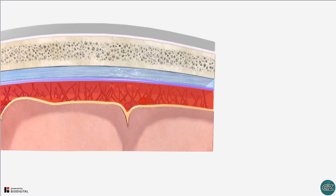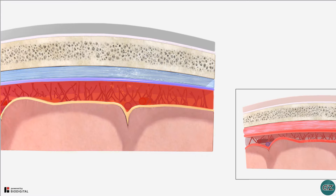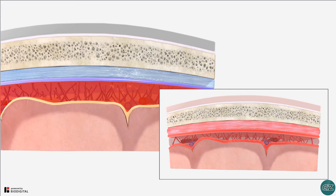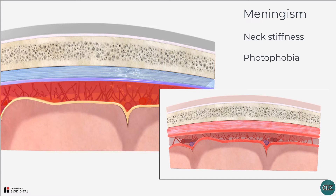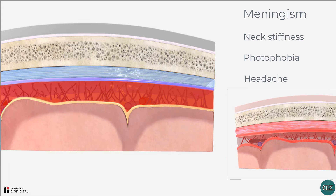When blood gets into the subarachnoid space, it irritates the adjacent meningeal layers. This irritation gives rise to the classical triad of symptoms of meningism, which includes neck stiffness, photophobia and headache. Meningism is not specific for blood within the subarachnoid space and can be caused by anything which inflames or irritates the meninges, and is also commonly associated with bacterial meningitis.